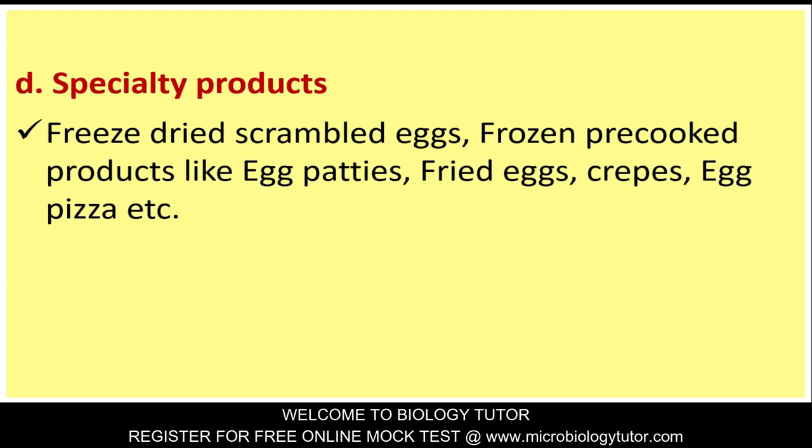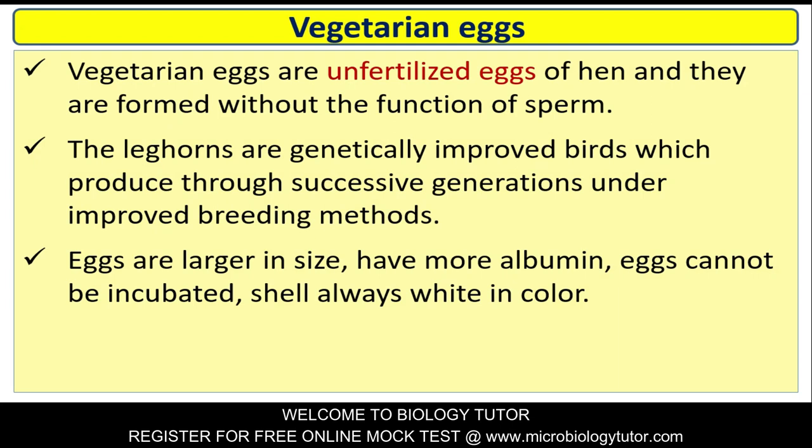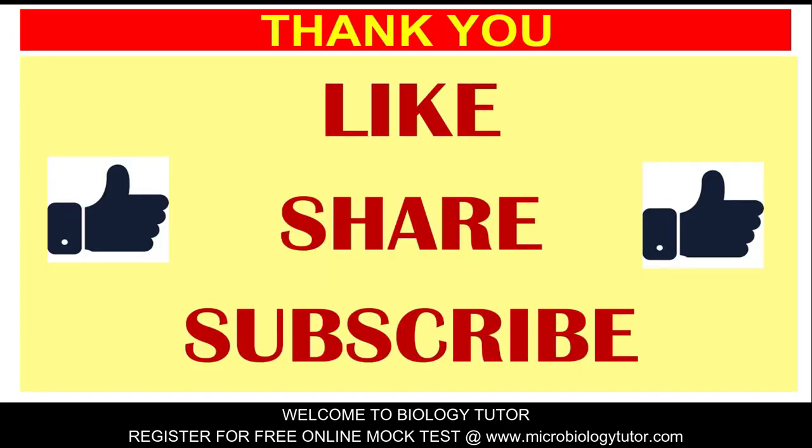Vegetarian eggs: Vegetarian eggs are unfertilized eggs of hen and are formed without the function of sperm. Leghorns are genetically improved birds which produce eggs through successive generations under improved breeding methods. These eggs are larger in size, have more albumin, cannot be incubated, and the shell is always white in color. Thank you - if you like this channel, please share and subscribe, and don't forget to click the bell button for notifications.